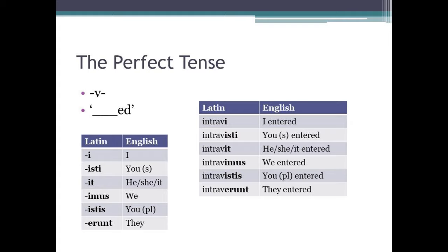So the endings are: i, isti, it, imus, istis, erunt — and that equates to I, you, he, we, you, they. So I'm afraid that there's more sets of endings to learn.